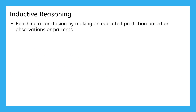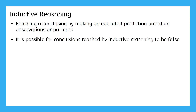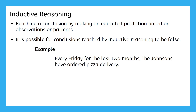Inductive reasoning is a little bit different. With inductive reasoning, we're reaching a conclusion by making an educated prediction based on observations or patterns. Since these conclusions are based on patterns and observations, it is possible for conclusions reached by inductive reasoning to be false. Seeing this in action might help to show the difference. Every Friday for the last two months, the Johnsons have ordered pizza delivery. Since this is not something that is guaranteed to always be true, we can't consider it a fact. This is a pattern that we've been able to observe for the last two months.